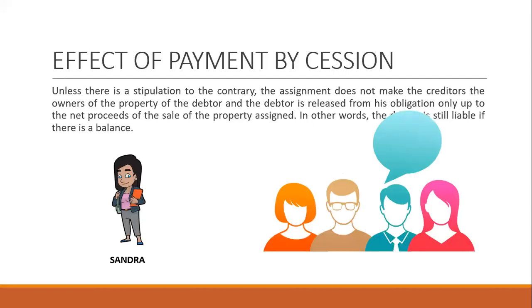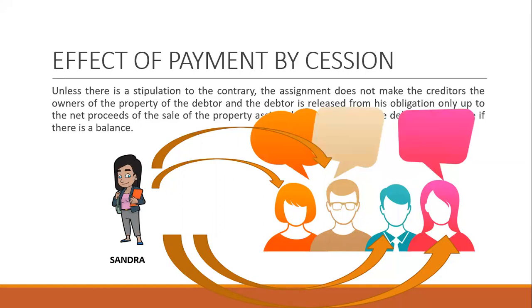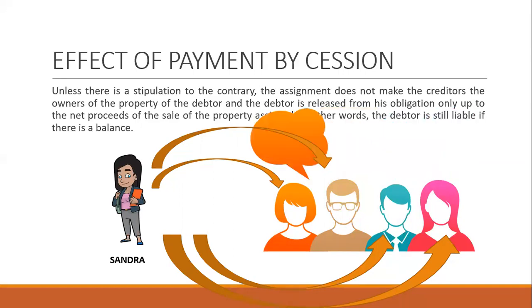For example, Sandra has obligations to four creditors. Going back to the requisites: there must be two or more creditors — here there are four, so the first requisite is complied with. The debtor must be partially insolvent — meaning Sandra can no longer pay her obligations when they fall due.